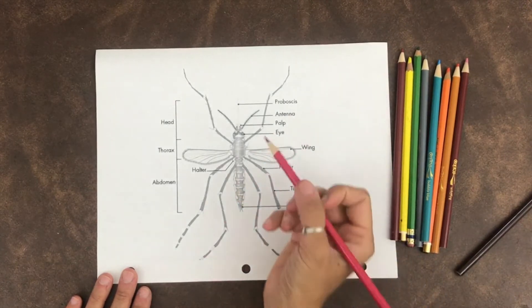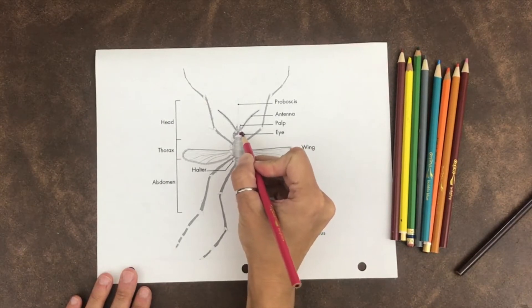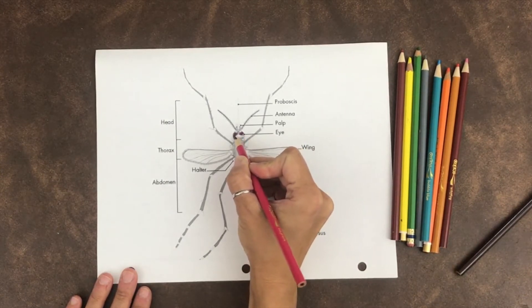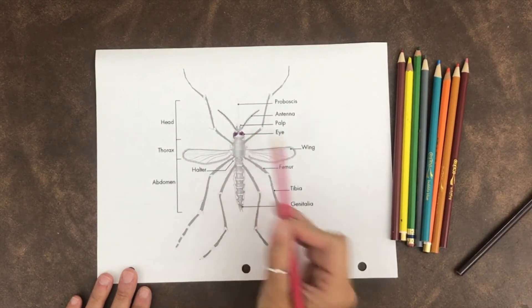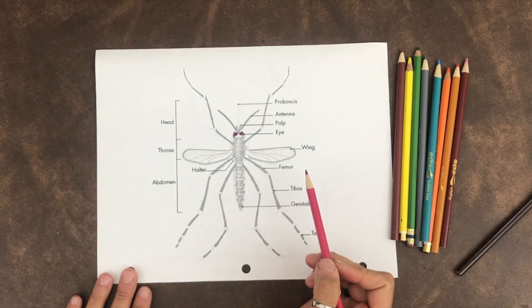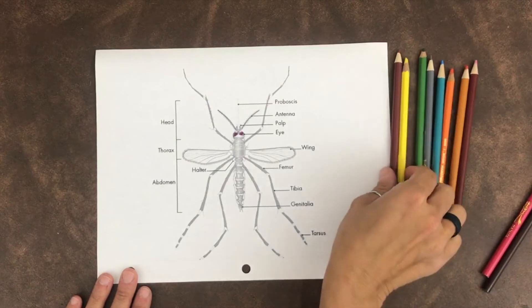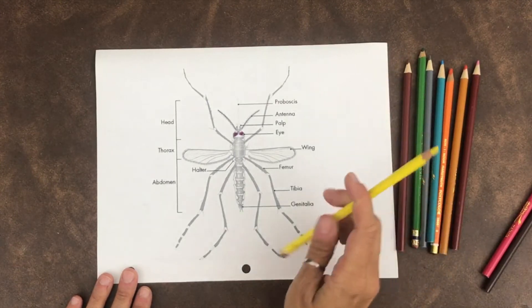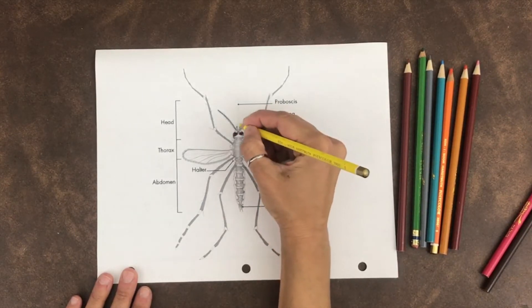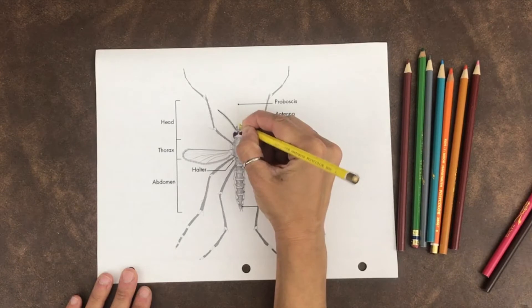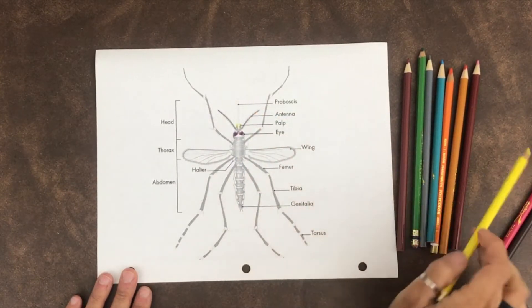Next, let's find the eyes. Then, let's find the palps. These are organs that are between the antennae, and they sense odor. They sense the smells for the mosquito. They're very small.